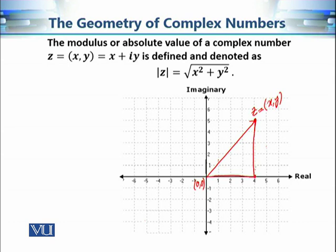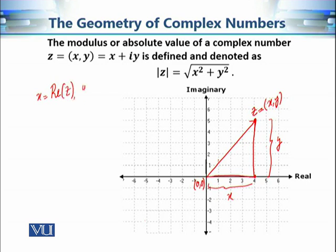Here x is basically this length and y is basically this length, because if I want to reach this point then I have to travel x units along the real axis and y units along the imaginary axis. So x is the real part of z, y is the imaginary part of z, and this length — the length of this hypotenuse — is basically the modulus of this complex number.